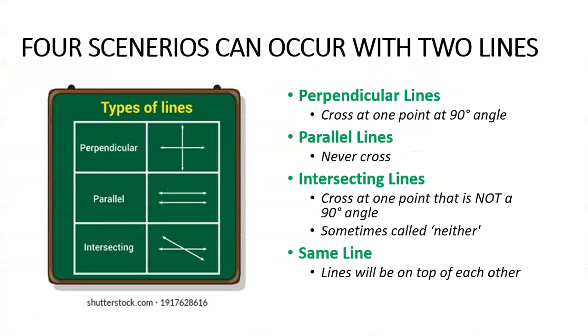Four scenarios can occur when you have two lines. They can be perpendicular, which means they cross at one point at a 90 degree angle. They can be parallel, which means they will never cross.